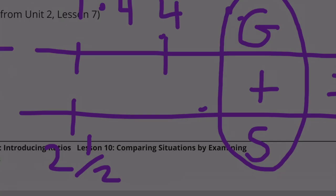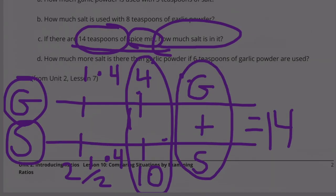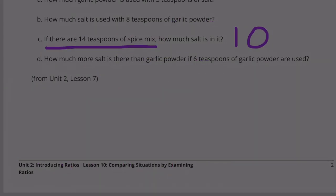1 times 4 to get 4. And 2.5 times 4, that's going to get me 4 times 2 is 8, plus half of 4 is 2. 8 plus 2 is 10. When there are 14 teaspoons of spice mix, there are 10 teaspoons of salt. So when there are 14 teaspoons of spice mix, 10 of those teaspoons are salt.